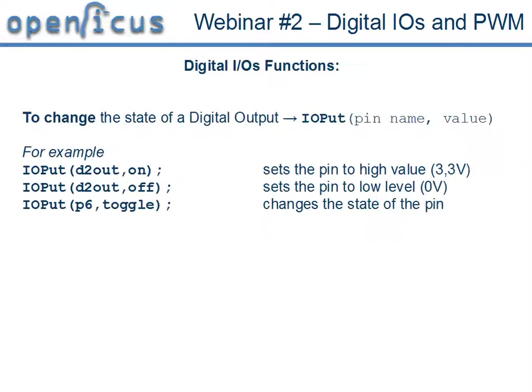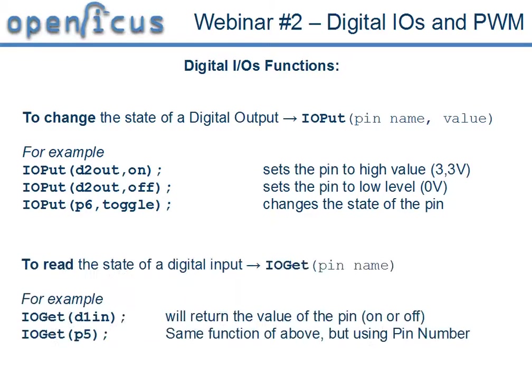Now let's take a look at the IO functions. For example, IOPUT is used to change the state of a digital output. We use the pin name, for example D2out or P6 — they are the same — and the value ON, OFF, or TOGGLE to change the state of the pin. To read the state of a digital input we use IOGET with the pin name, for example D1in or P5.